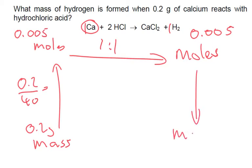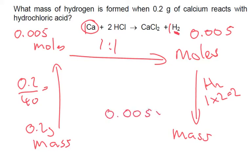Back down we go to mass — we're looking at hydrogen now. Hydrogen is H₂, which is 1 times 2, giving 2. So each mole has a mass of 2 grams, but we have 0.005 moles — so times that by 2 — and we get 0.01 grams.